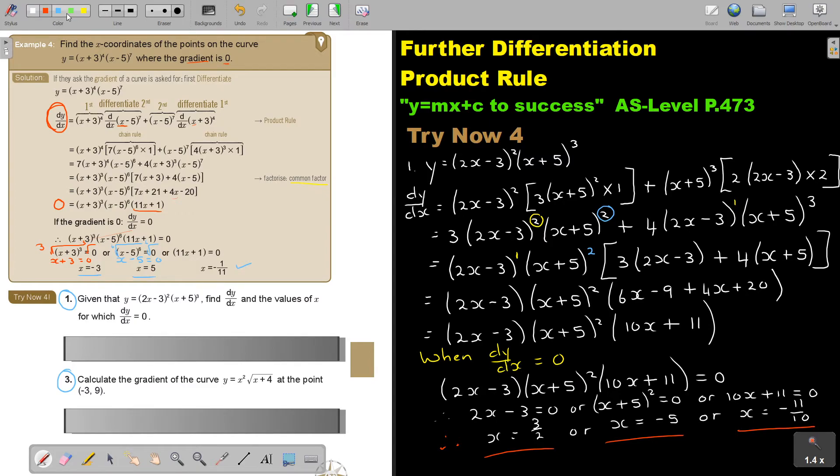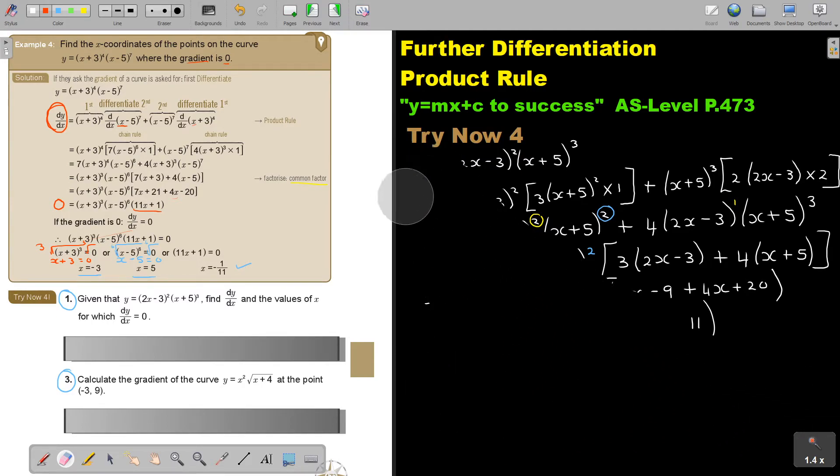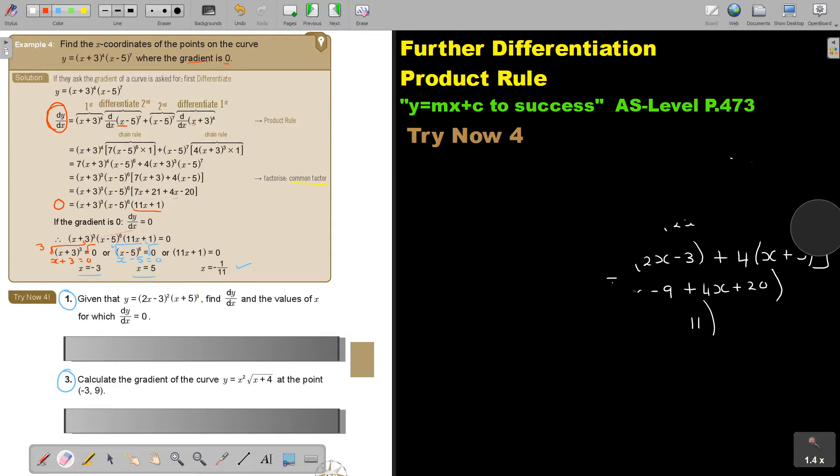Let's look at the next one. That was the first one. Number 3. Calculate the gradient of the curve at the point. Now I must calculate. Now the gradient is not given, I must calculate. Again, if you struggle with the basics, first go to chapter 6, revise that, and then come back to this chapter.